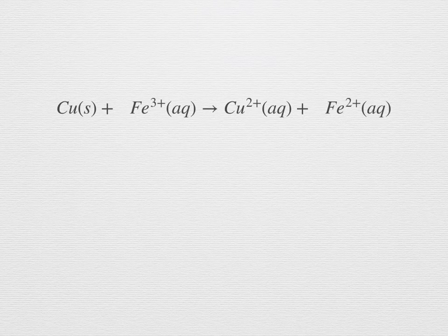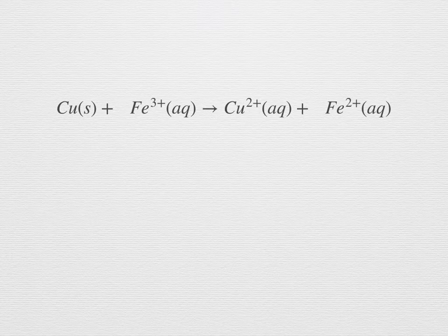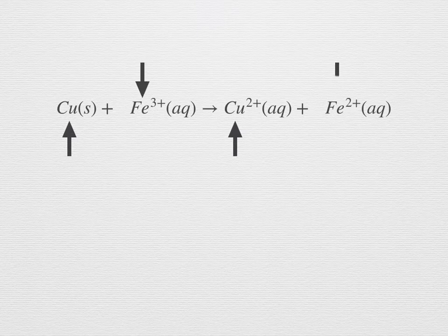Consider this equation: Cu + Fe³⁺ → Cu²⁺ + Fe²⁺. We often leave out the counter ions that are just spectators to the real reaction but must be there to maintain electroneutrality — for instance, the ionic species could all be associated with nitrate, sulfate, or chloride ions. Without thinking about electrons, you might be tempted to see the above equation as already balanced: one copper with one copper, and one iron with one iron. The atoms do balance, but the electrons do not.